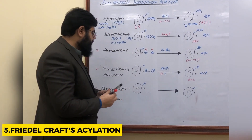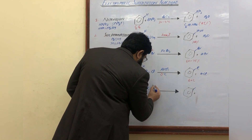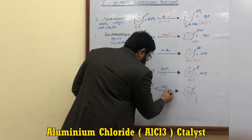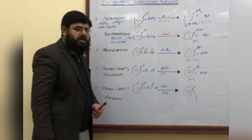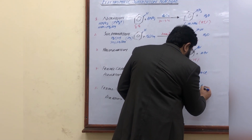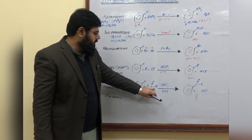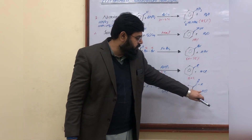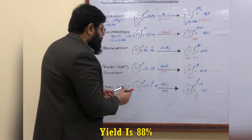The last reaction is Friedel-Crafts acylation. Acyl halides are treated with benzene in the presence of aluminium chloride, and the reaction is conducted at 40 degrees Celsius. The product is acylbenzene and the byproduct is a halo acid — HCl if chlorine is used, or HBr if bromine is used. The yield of this reaction is 88 percent.